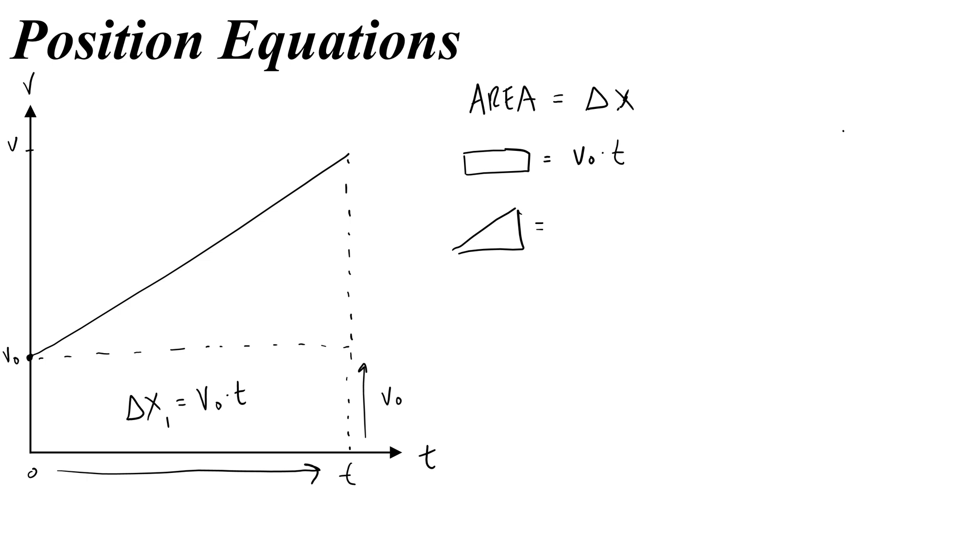Then this triangle right here would follow the equation half of the base times height. The base of the triangle is still going to be t. But the height is actually going to be delta v, because we're going from v naught to v. And this would represent the change from that initial velocity to the final velocity. Delta v is v minus v naught. So now I can use delta v, or v minus v naught, and t as my base and height. So we'll do one-half, we'll start with the height, v minus v naught, times t, the base. And I know that this, we can call it delta x2, displacement of the triangle portion would be half of v minus v naught times t.